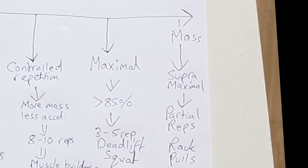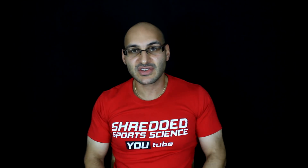Supramaximal exercises include rack pulls, partial rep squats, and partial rep deadlifts — using extreme mass with a smaller range of motion. There is virtually no acceleration, but using large mass with a smaller range of motion activates hard-to-reach type 2 muscle fibres and recruits more motor units. Speed exercises also have the ability to recruit large motor units. Preparing your training program is an art form, so you can mix up your warm-ups — speed exercises one day, supramaximal rack pulls the next.